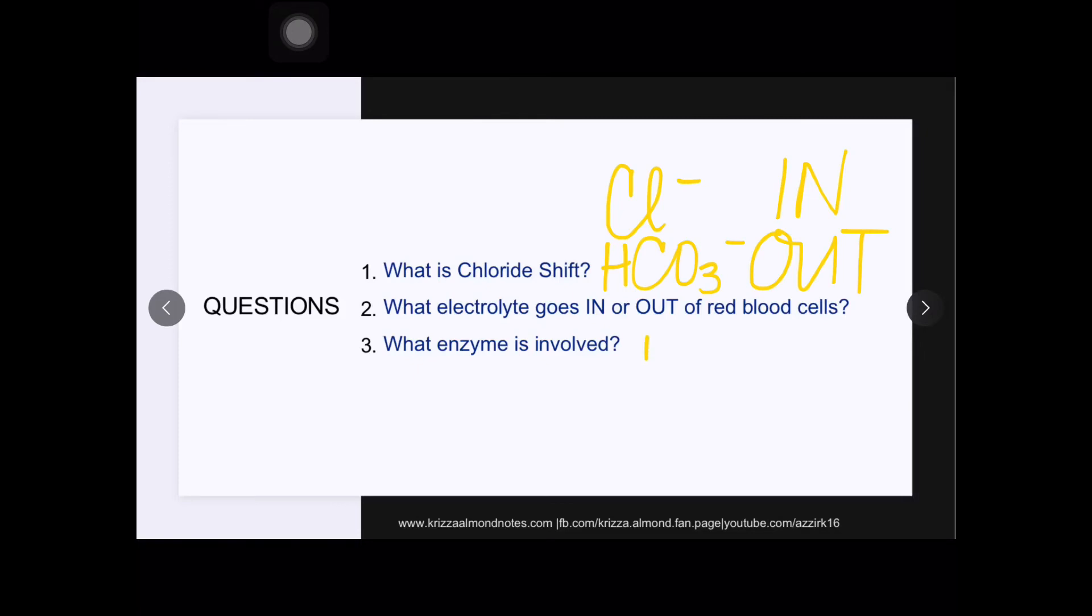The enzyme involved is carbonic anhydrase and carbonic anhydrase catalyzes the combination of carbon dioxide and water to produce carbonic acid. Carbonic acid is again going to be dissociated into bicarbonate and hydrogen ions and the bicarbonate ions will go out and be replaced by chloride which will go in the red blood cells.